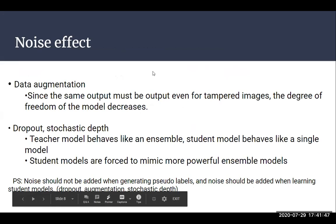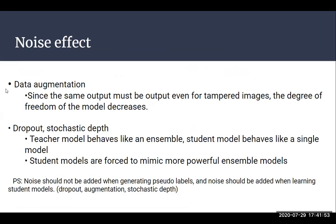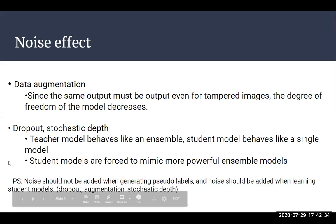The important part of noisy student training is the noise added to the student. They use RandAugment data augmentation to augment the images, with the goal that the student model should produce the same output for both original and augmented images. They also add dropout and stochastic depth noise so that the student model behaves like an ensemble of models. In dropout, some neurons are dropped during training; in stochastic depth, entire layers are dropped. So each time the student model is trained it gets a different network, and in the end it behaves like a powerful ensemble model.